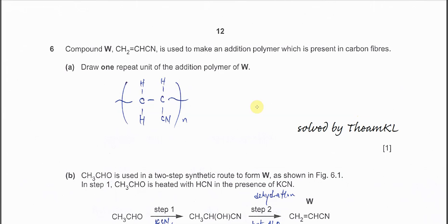Question 6: compound W, CH2CHCN, is used to make an addition polymer. Draw one repeat unit of the addition polymer of W. We should focus on the double bond, so the double bond must open up and form the polymer unit.